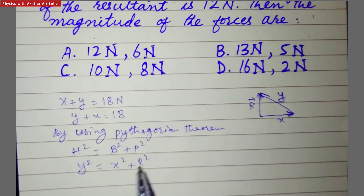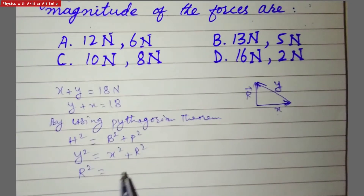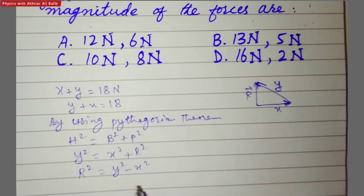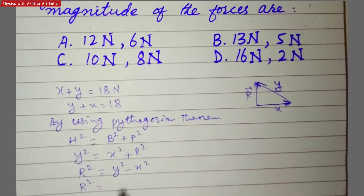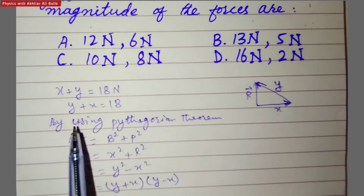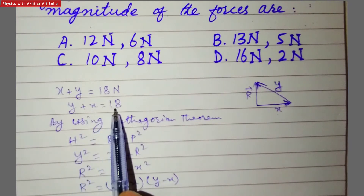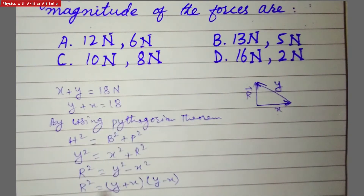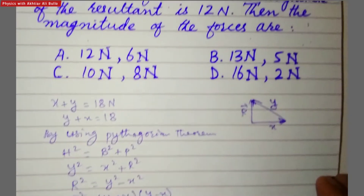r squared will be equal to y squared minus x squared. This is the formula for the difference of two squares, so r squared equals y plus x multiplied by y minus x.